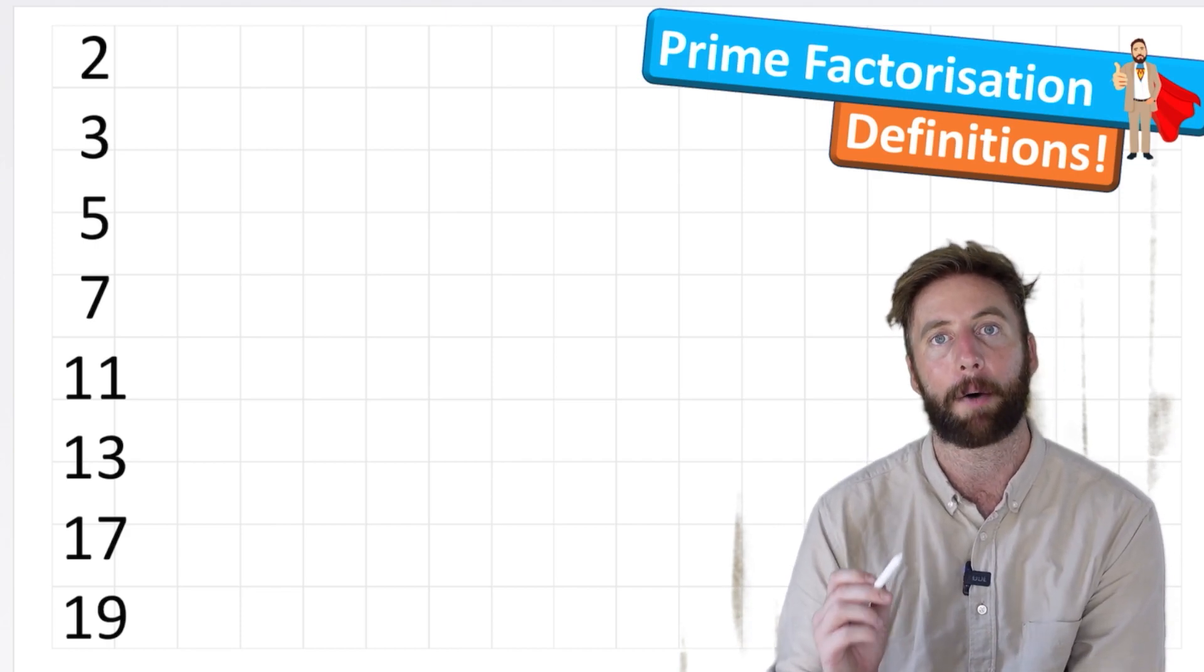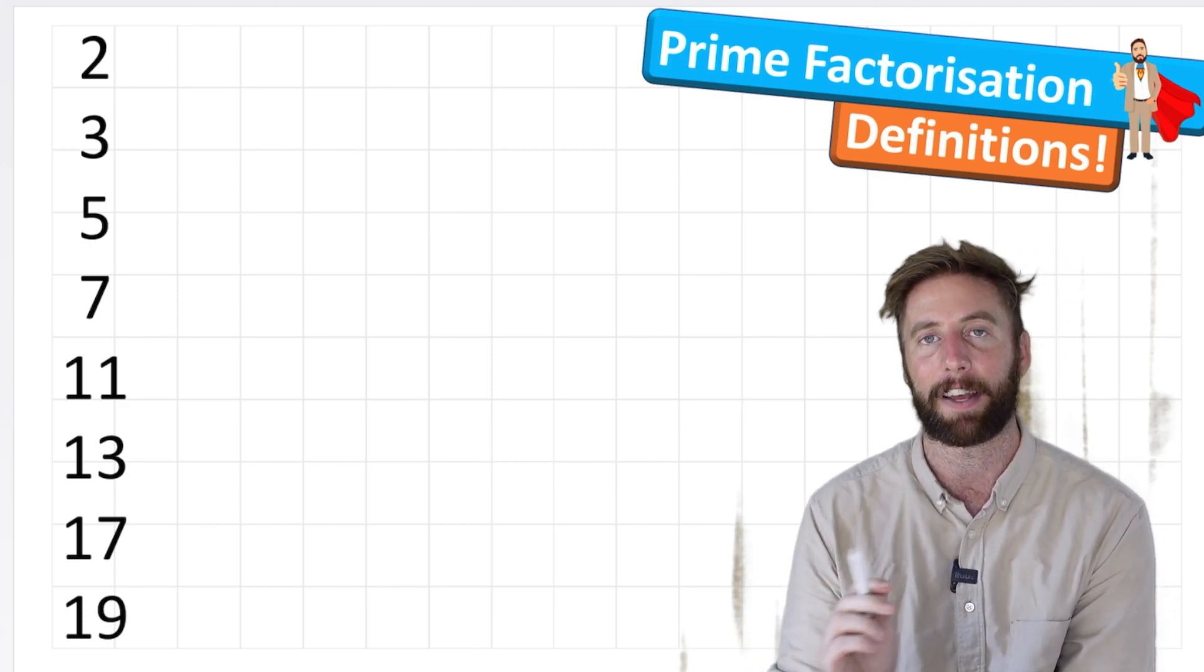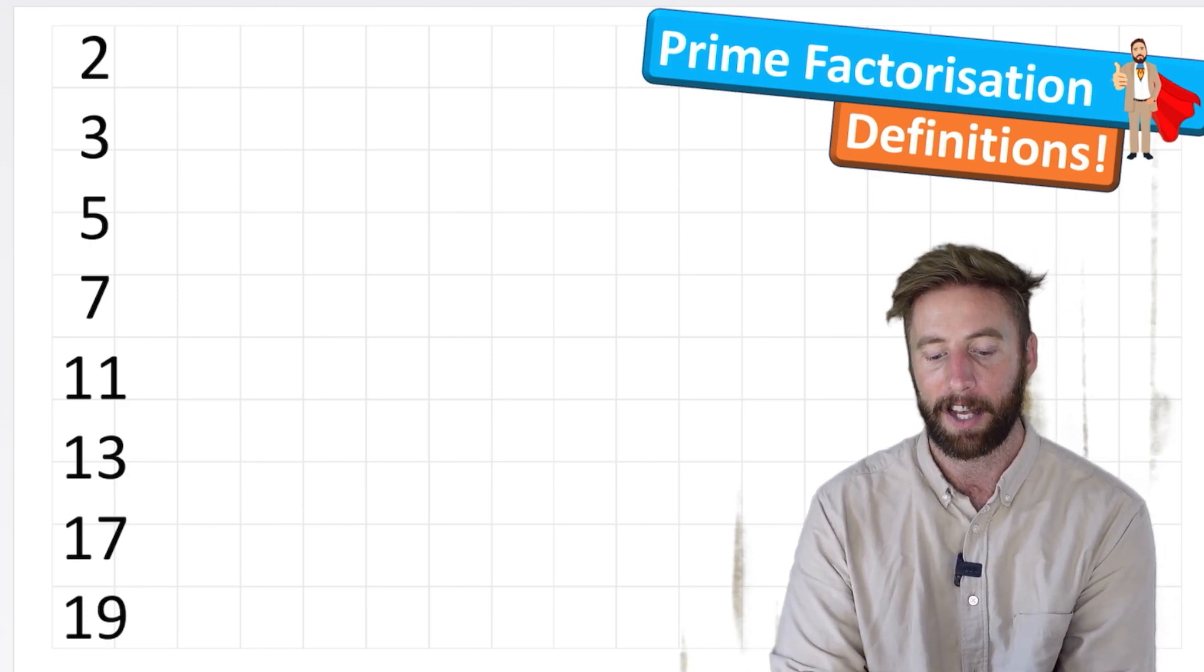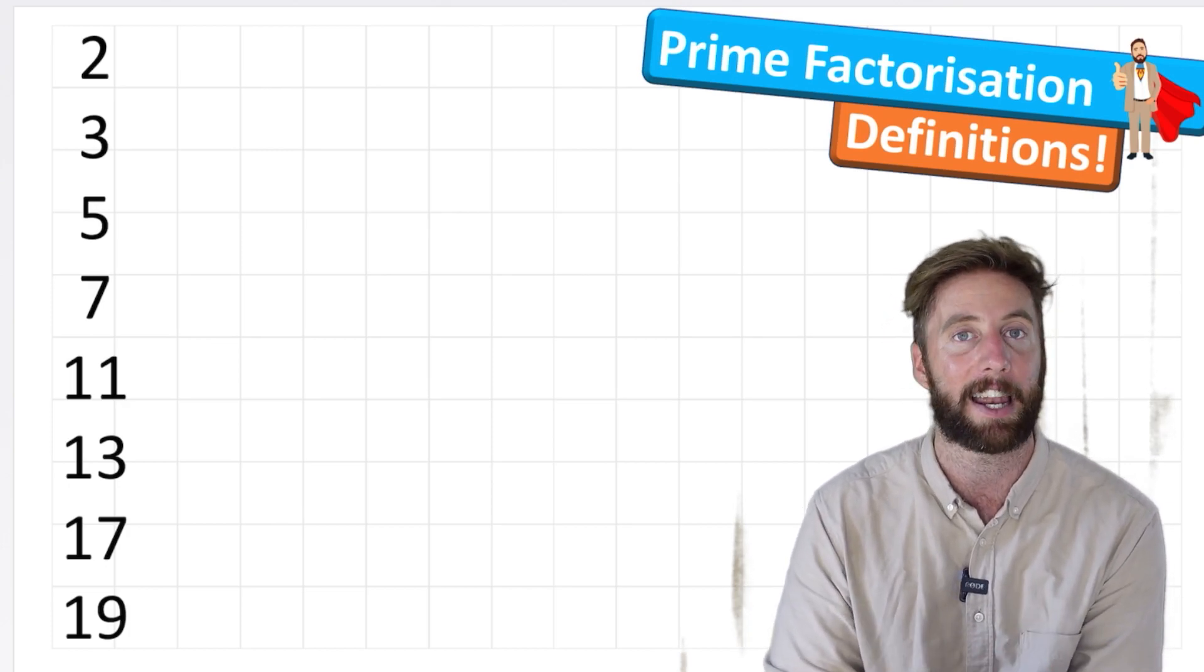But just to recap, a prime number is a number that can only be multiplied by the number 1 and itself. It has no other factors. So all of these numbers here can only be multiplied by itself and 1 to get that number.